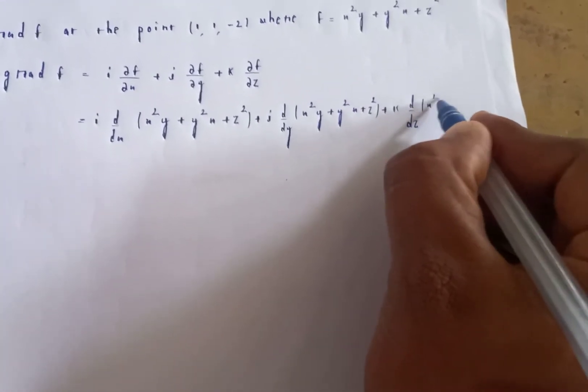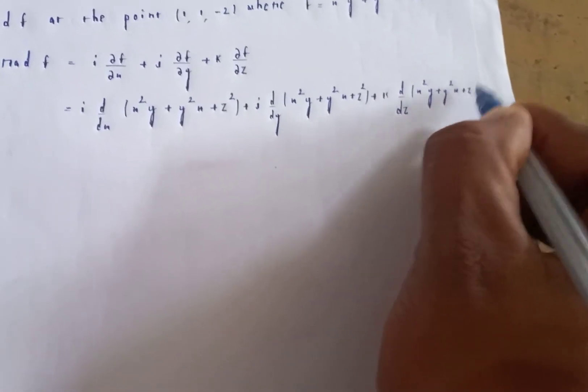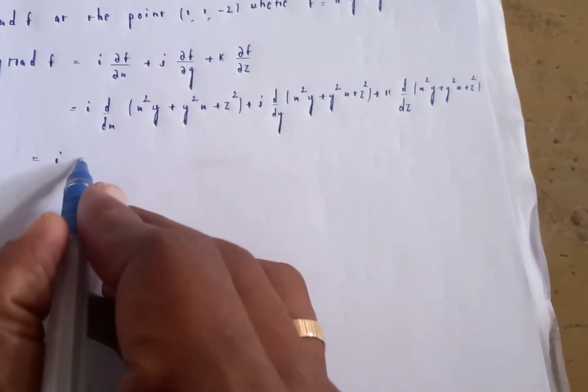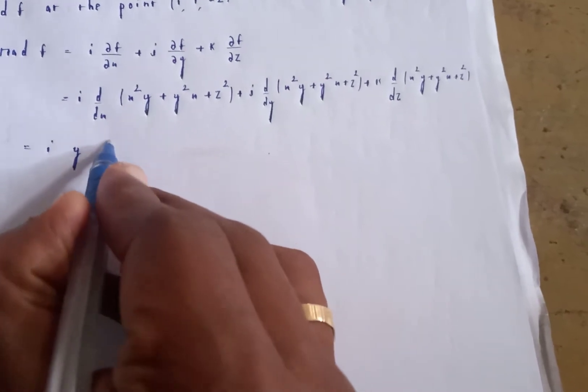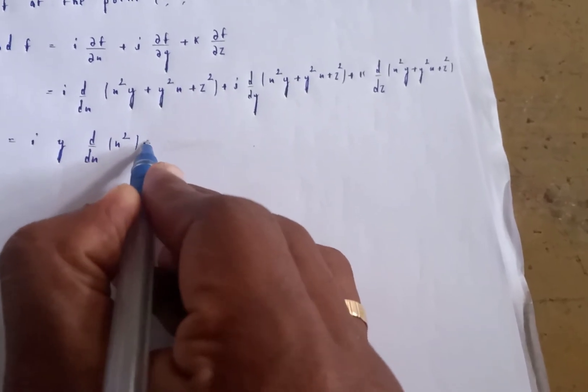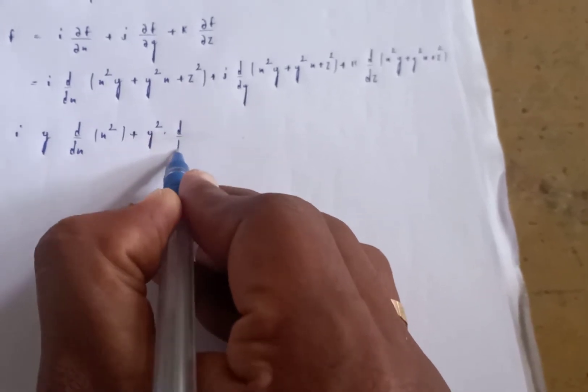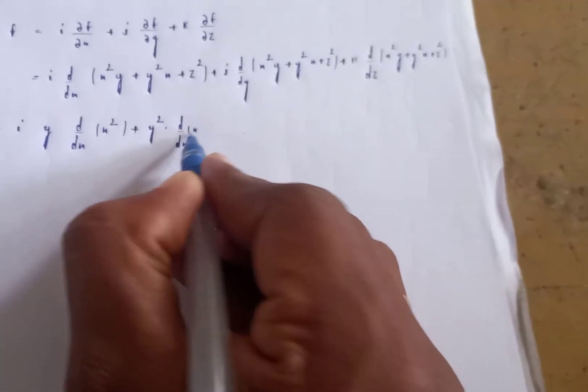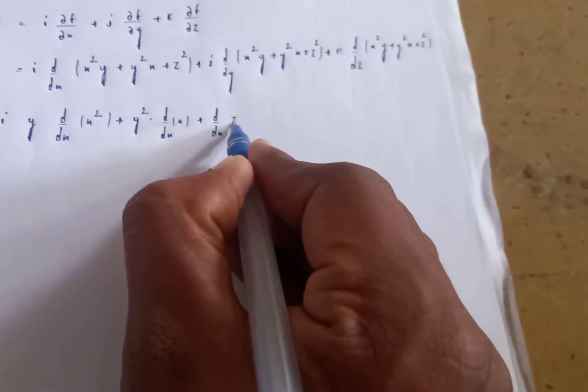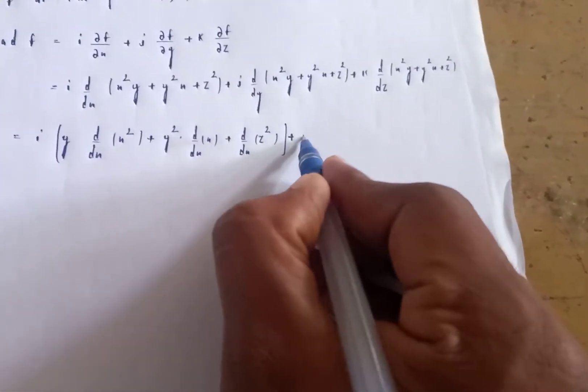For the i component, y is constant so d/dx of x² gives 2x, y² times d/dx of x gives y², and d/dx of z² is 0.